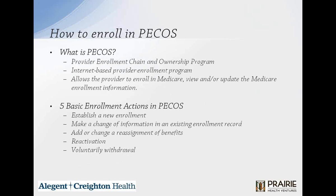After you apply for your NPI, you can then enroll in PECOS — the Provider Enrollment Chain and Ownership Program. It's an internet-based provider enrollment program that allows a provider to enroll in Medicare and view or update Medicare enrollment information. There are five basic enrollment actions within PECOS: establish a brand new enrollment, make changes to existing information, add or change reassignment of benefits, reactivate, or voluntarily withdraw.